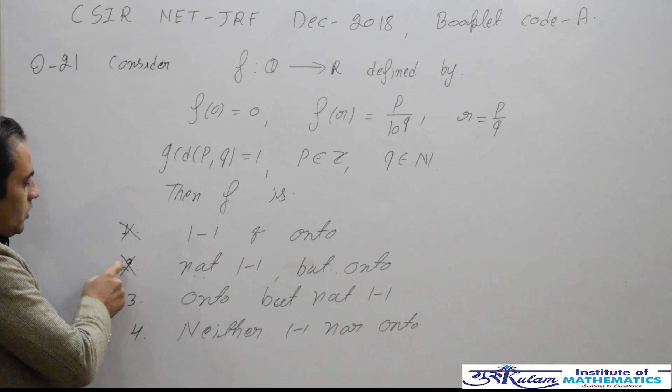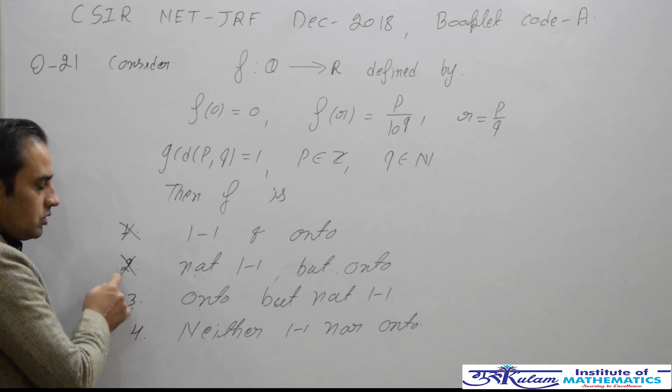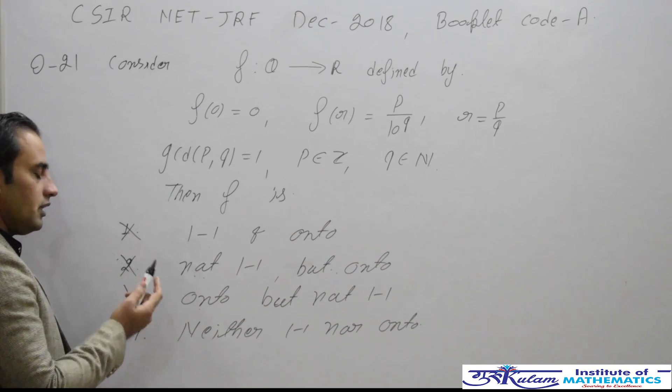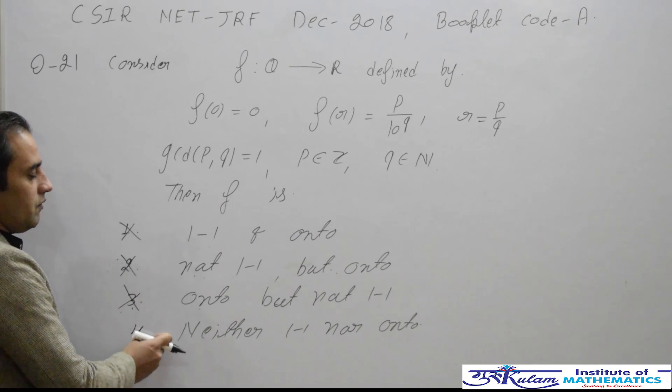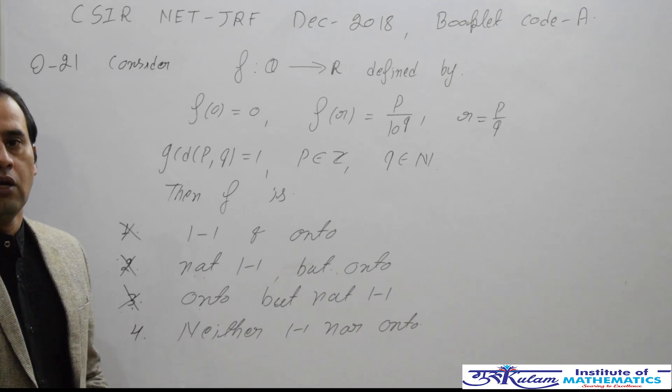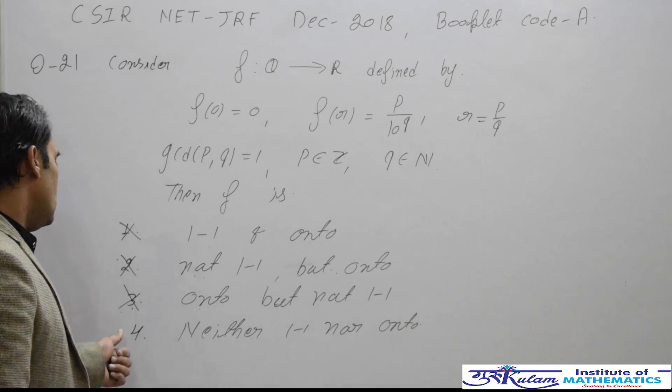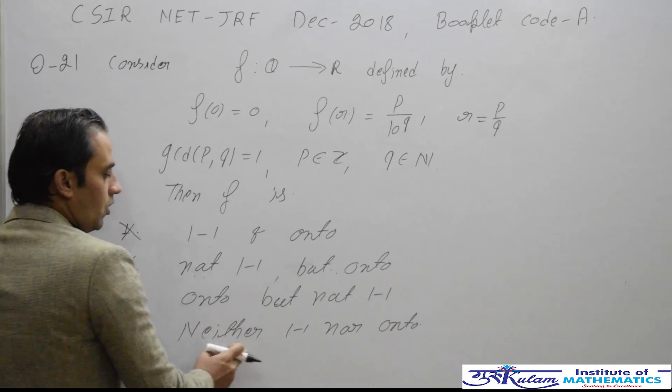In this problem, the second and third options are the same, so both are incorrect. We have to identify whether the fourth option is true. We need to check if this function is one-to-one. It is definitely not onto.